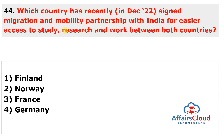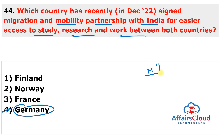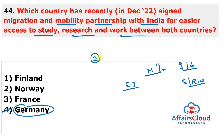Question 44: Which country signed a migration and mobility partnership with India for easier access to study, research, and work between both countries? The answer is Germany. A comprehensive migration and mobility partnership agreement was signed between India and Germany. It was signed by Indian Union Minister S. Jaishankar under the Ministry of External Affairs. The agreement will facilitate two-way movement of students, professionals, and researchers, and address challenges of illegal migration.